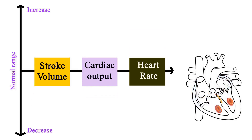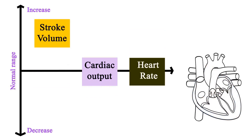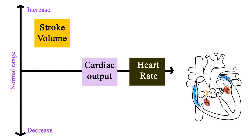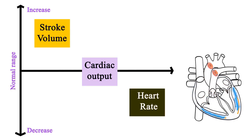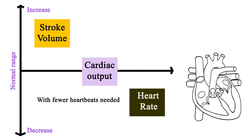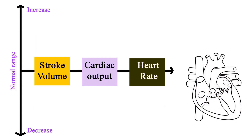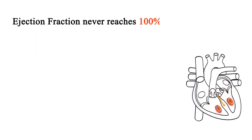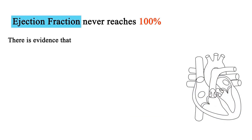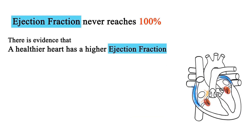However, if stroke volume is increased, the amount of blood ejected by the heart increases. This would mean fewer heartbeats were needed to circulate the same amount of blood per minute. With fewer heartbeats needed, the heart becomes more efficient as less contractile work is necessary per minute to circulate blood. Ejection fraction never reaches 100%; however, there is evidence that a healthier heart has a higher ejection fraction.